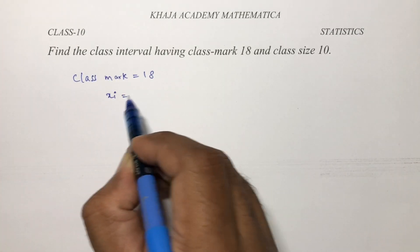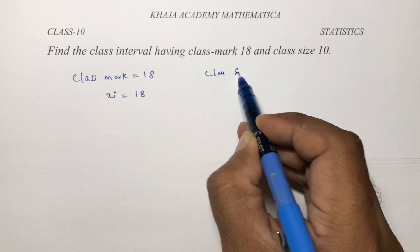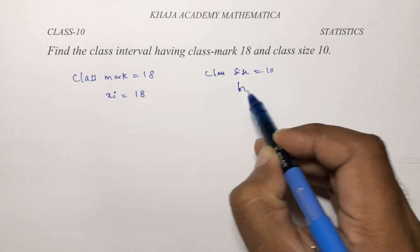That is, xi value is 18 and class size is 10. So h is 10.